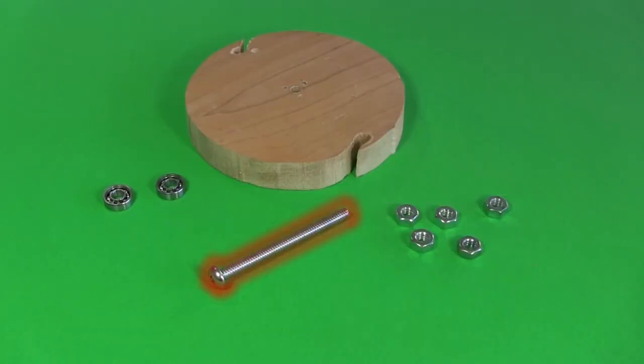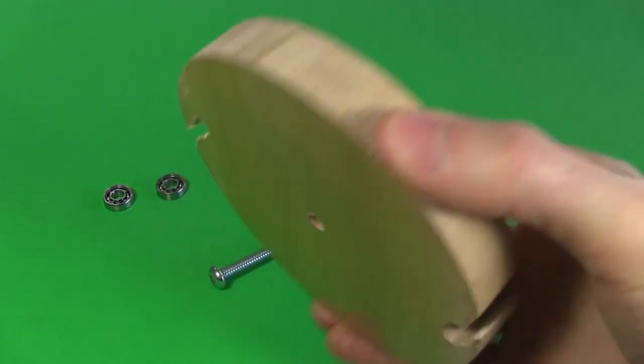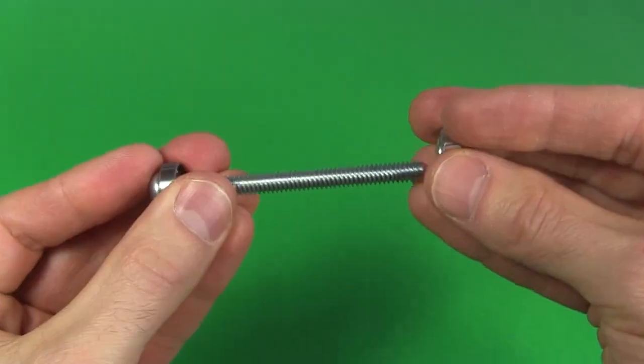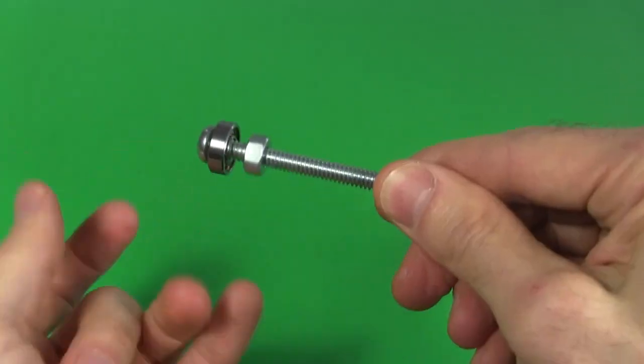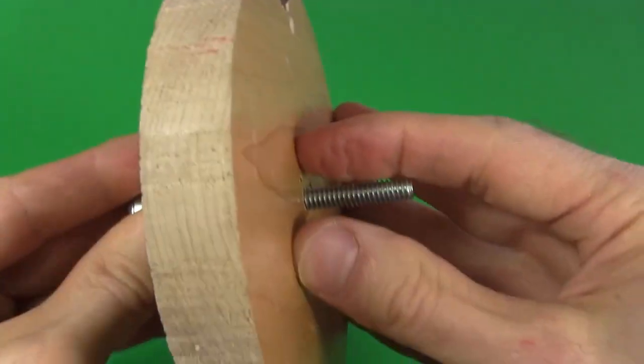The shaft is simply this quarter inch bolt, there are these five nuts, and the flywheel is just a chunk of scrap hardwood. To make it, I start by putting one bearing on the shaft, along with the nut to hold it there. Then another nut, the flywheel, and another nut.